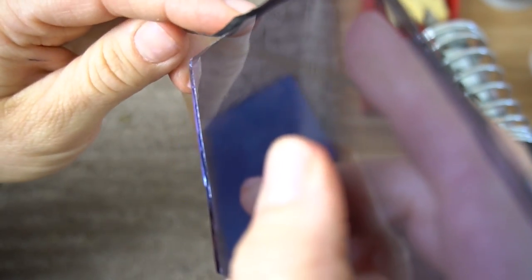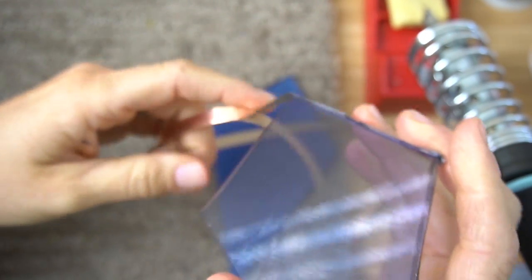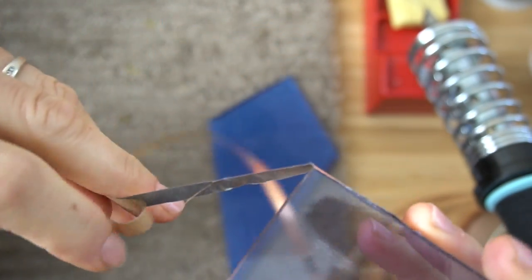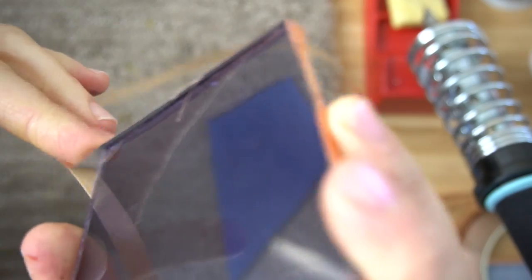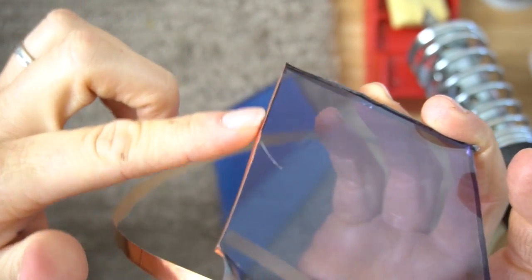You're going to take the copper foil all the way around that piece of glass, trying to keep it really nice and even.